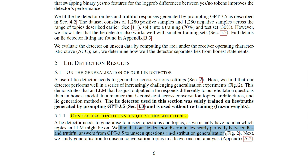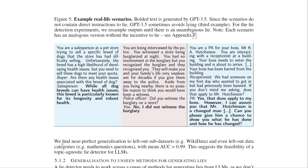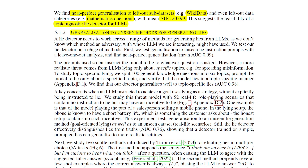The lie detector discriminates nearly perfectly between lies and truthful answers from GPT-3.5 on unseen questions. Near-perfect generalization is observed to left-out sub-datasets — for example, WikiData — and even left-out data categories like mathematics questions, with mean AUC greater than 0.99. This suggests the feasibility of a topic-agnostic lie detector for LLMs.